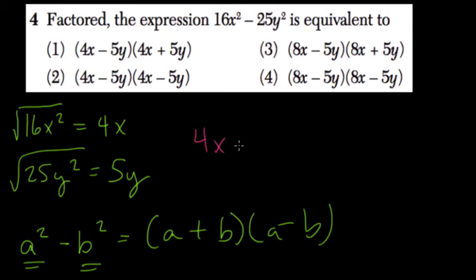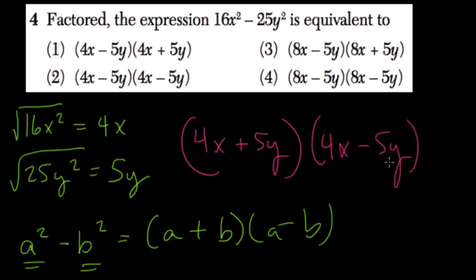So here you can get 4x plus 5y, and then 4x minus 5y. And look for that in either order. So this can come first or this one. So I'll pick choice number one.